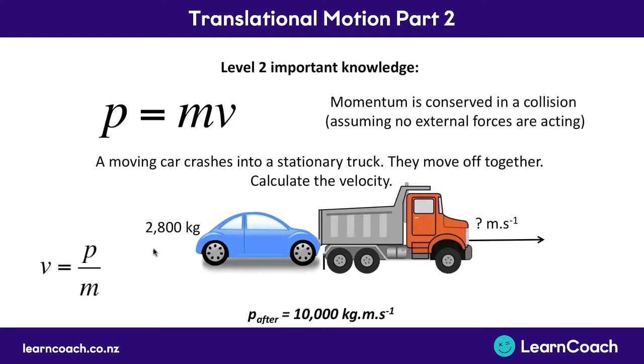So we can use this and their combined mass of 800 kgs plus 2,000 kgs which we've got here to calculate the velocity using p equals mv, or again rearrange to v equals momentum over mass. So if we put momentum of 10,000 divided by 2,800 in, we'd get a final velocity of 3.57 meters per second.